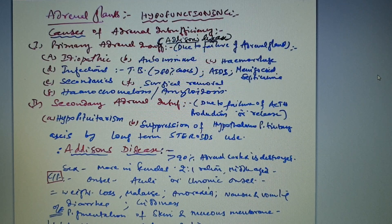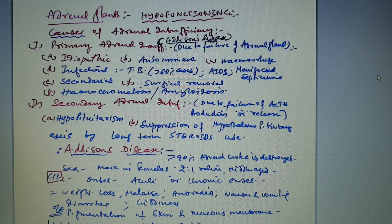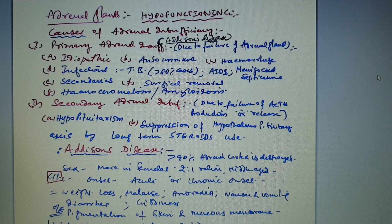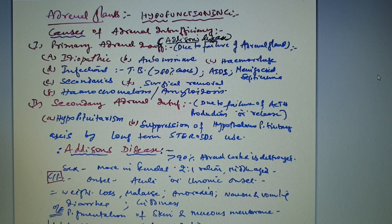The outer area of the gland is called the cortex, and the inner part is called the adrenal medulla. The adrenal cortex has three zones: zona glomerulosa, which secretes mineralocorticoids (aldosterone); zona fasciculata, which secretes glucocorticoids; and zona reticularis, which secretes sex hormones. The adrenal medulla produces catecholamines, and their excess leads to pheochromocytoma.